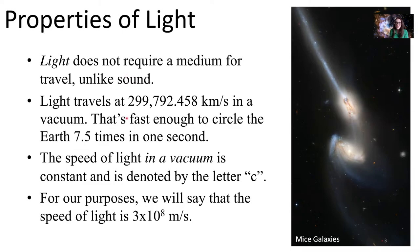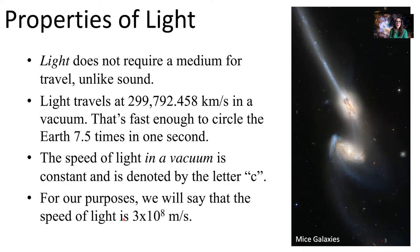Light travels at a special speed — almost 300,000 kilometers per second. That's fast enough to circle our Earth 7.5 times in one second. The speed of light in the vacuum is a constant, and we denote it by the lowercase letter C. For our purposes, the speed of light is 3 times 10 to the 8 meters per second.